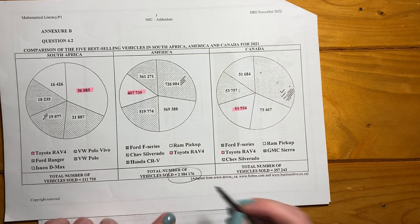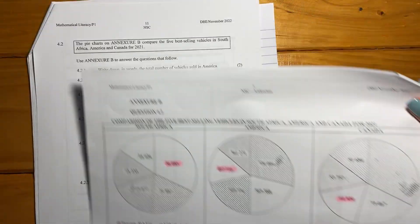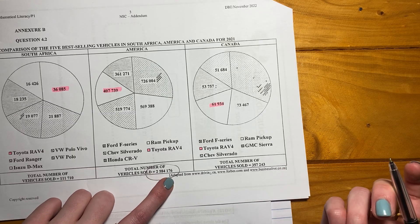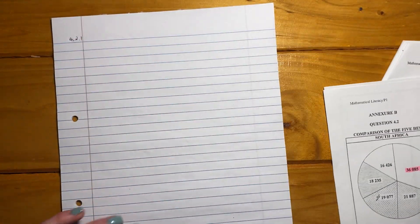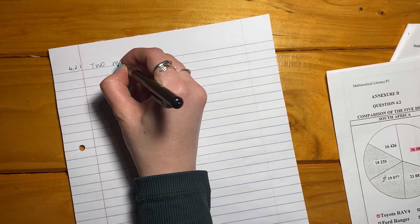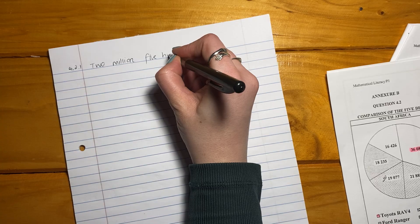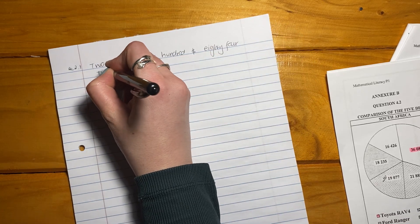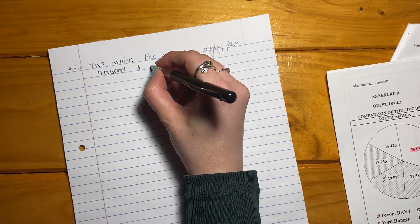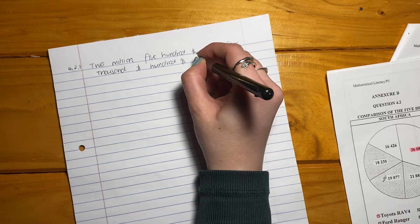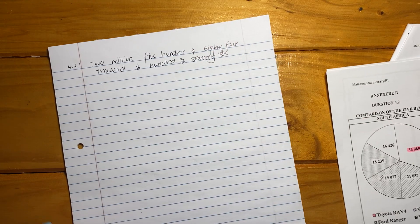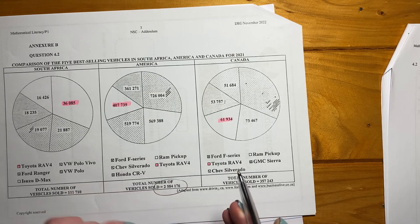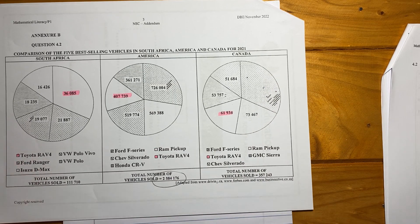We have to write that amount out in words. So we're going to say 2,584,176. So it is two million, five hundred eighty-four thousand, and one hundred seventy-six. Here they are basically looking where you get your marks as they're looking at your unit places. So million, thousands, and then just your units. That's how they're expecting you to write it out. We've got two marks.